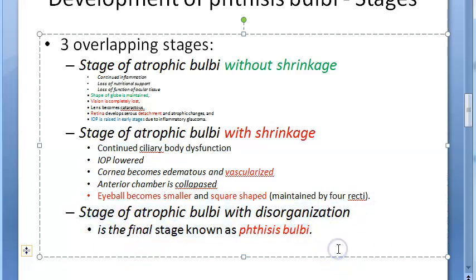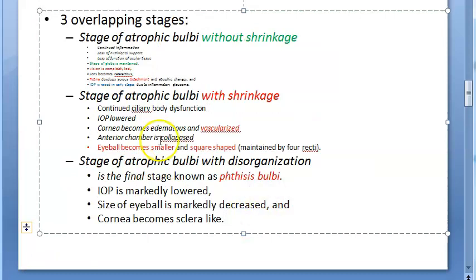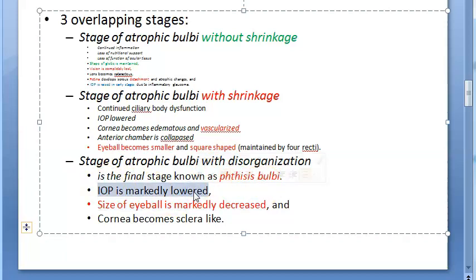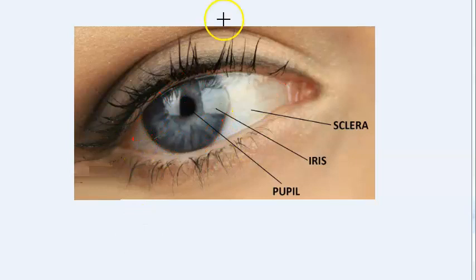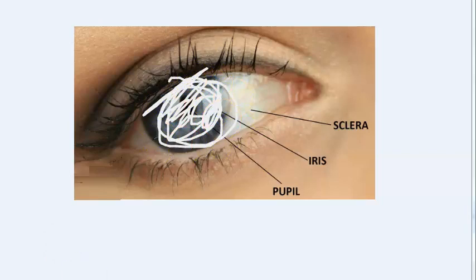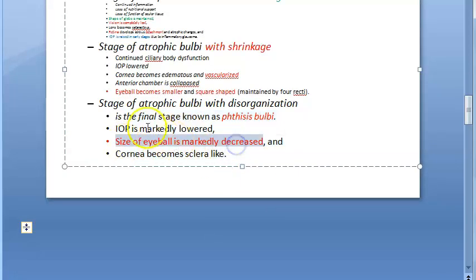Stage three is atrophic bulbi with disorganization — this is the final stage and is exactly what is called phthisis bulbi. The size of the eyeball is remarkably decreased. IOP is markedly lowered, which is the general characteristic of phthisis bulbi. The cornea becomes sclera-like — meaning the normally transparent cornea starts to resemble the opaque white sclera, giving the eye an appearance where you cannot distinguish the cornea.